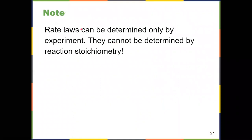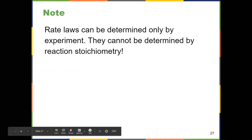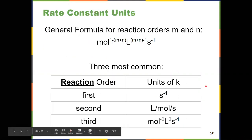Rate laws can only be determined by experiment — you have to get those superscripts from experimental data; you can't do it just by looking at the reaction. You might see some resources that say you can, but there are special criteria that must be met for that to be the case. Don't assume — use the method of initial rates to determine these things.